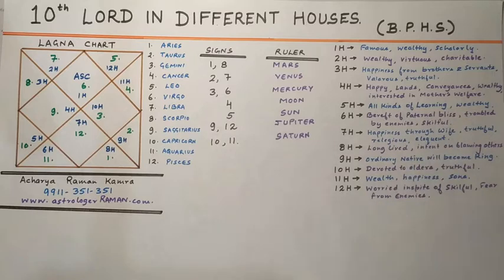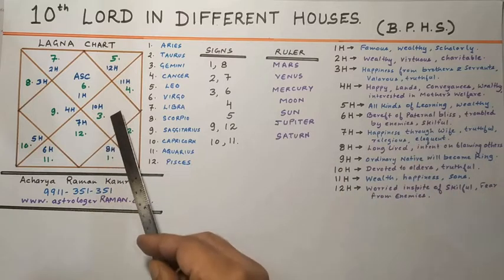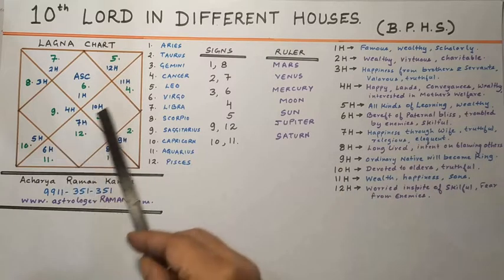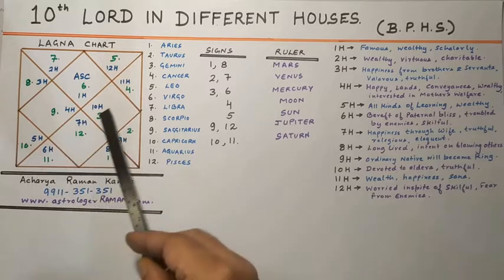If the 10th Lord is placed in the 5th house, the native would be endeared with all kinds of learning, will always be delighted, will be wealthy, and will be endeared with sons.